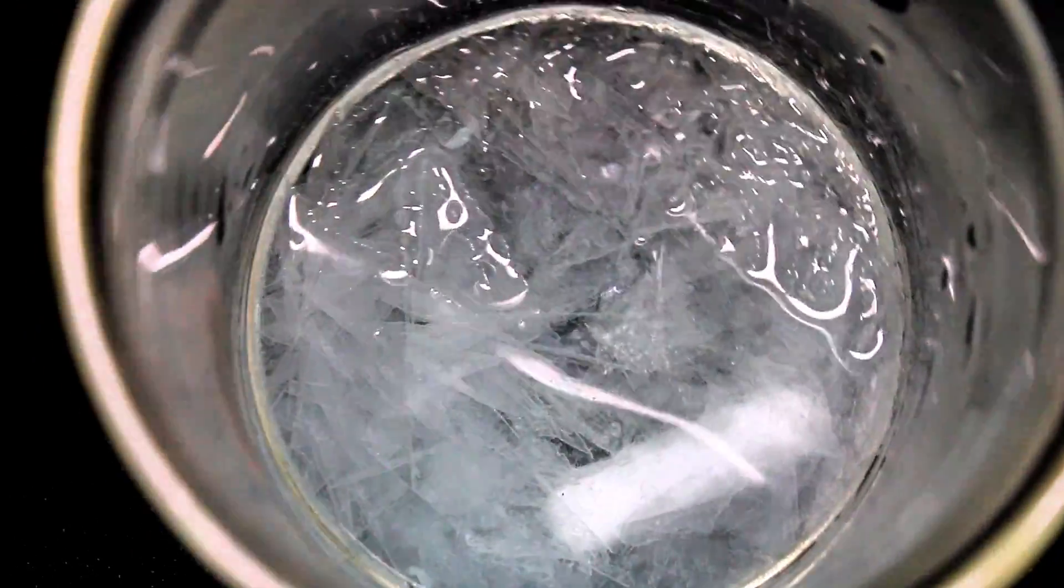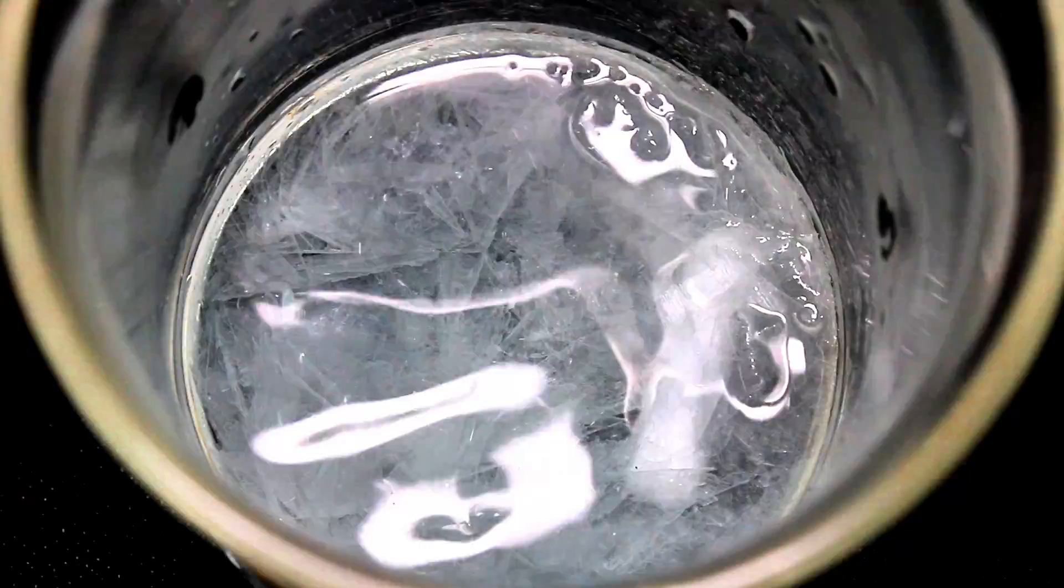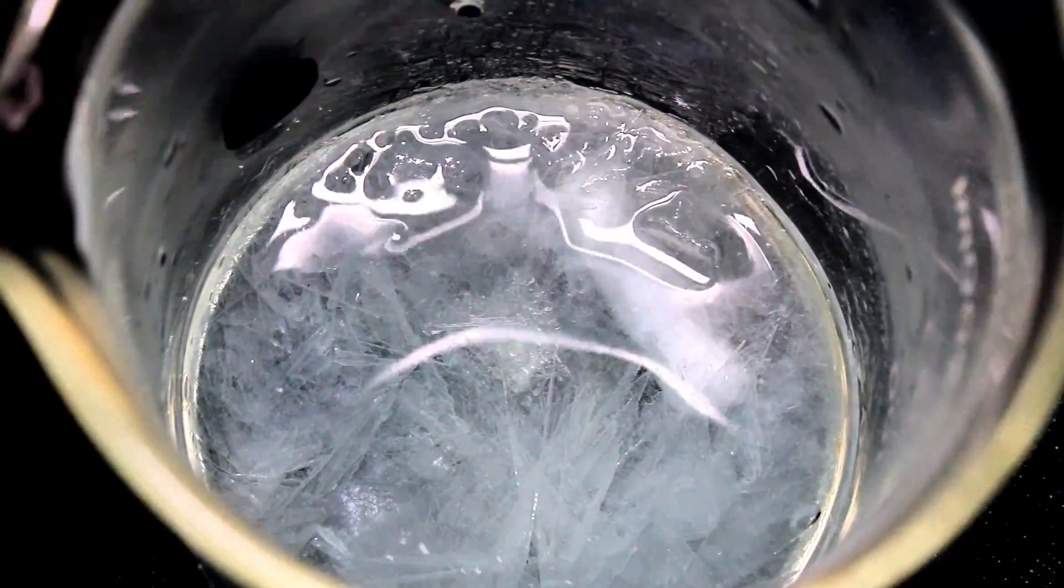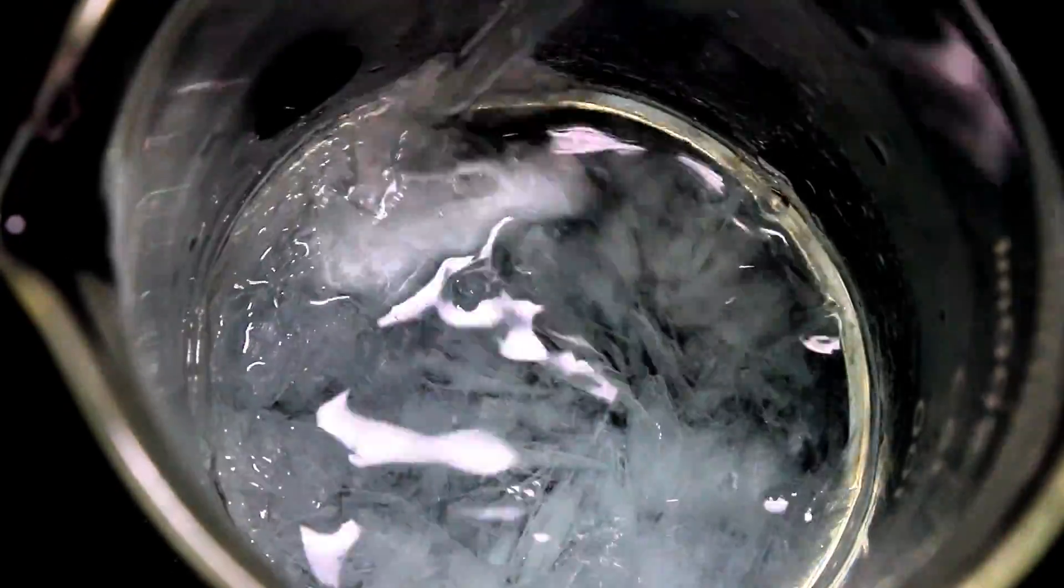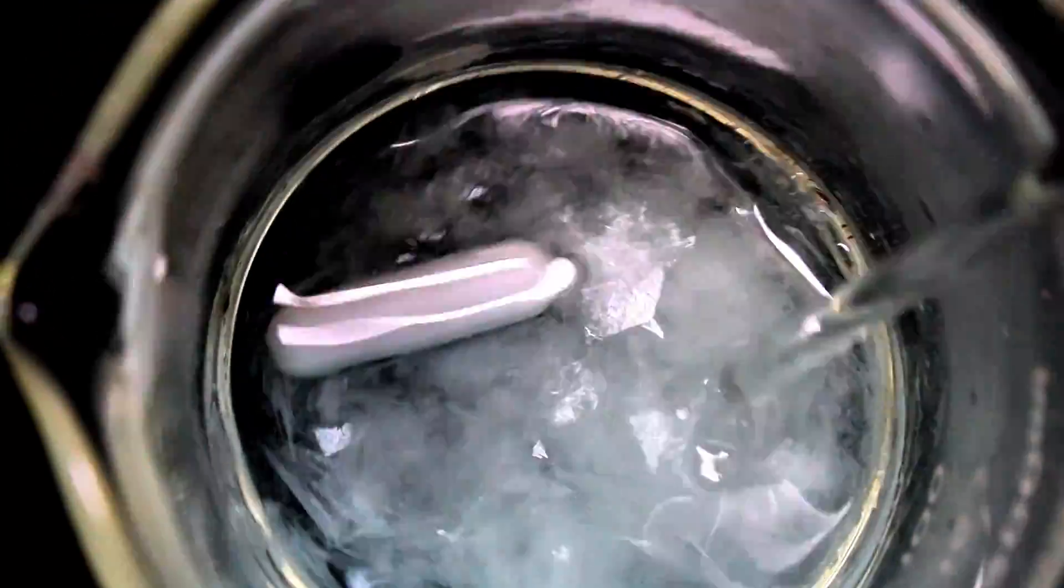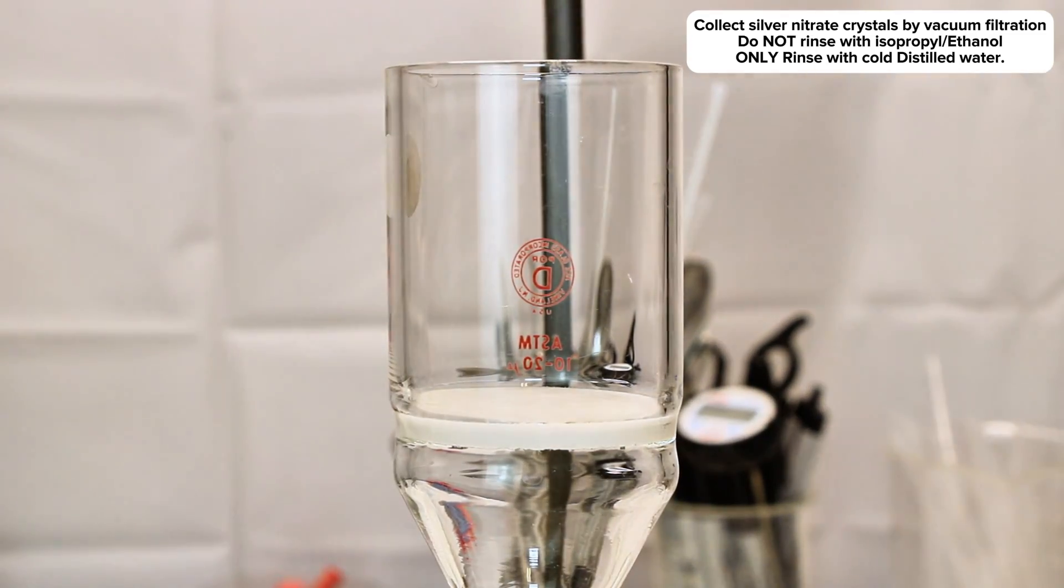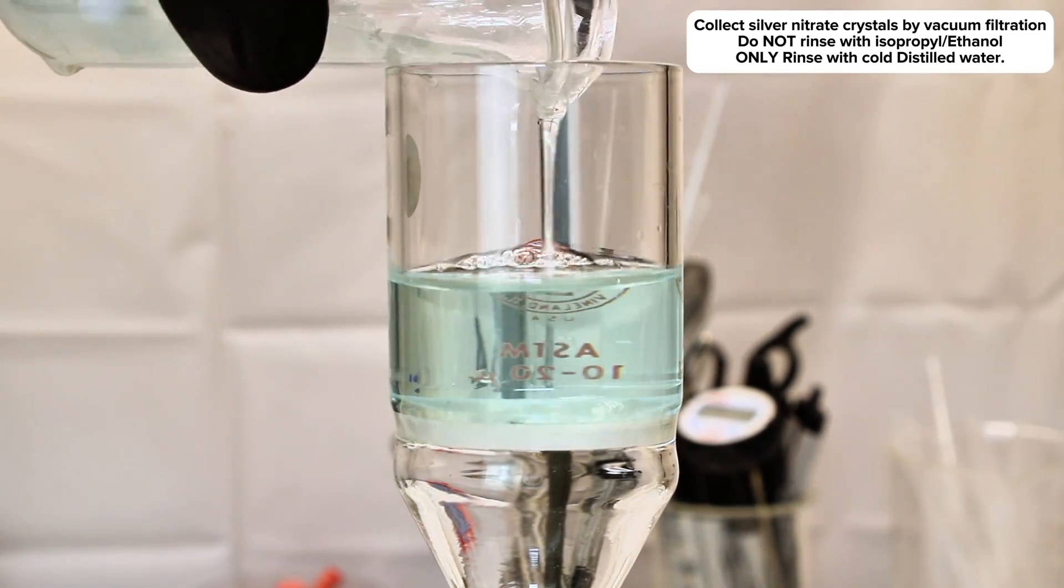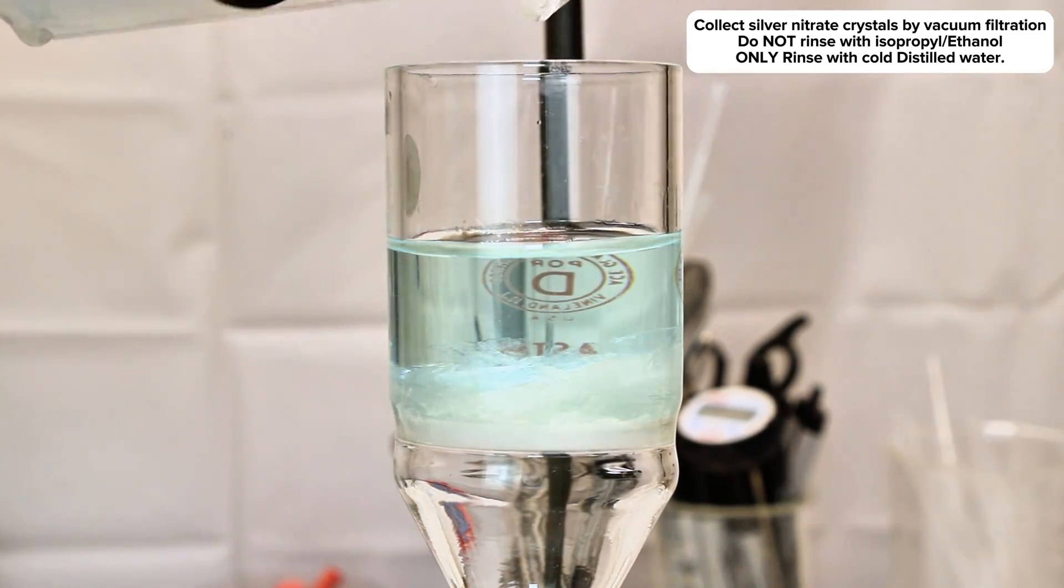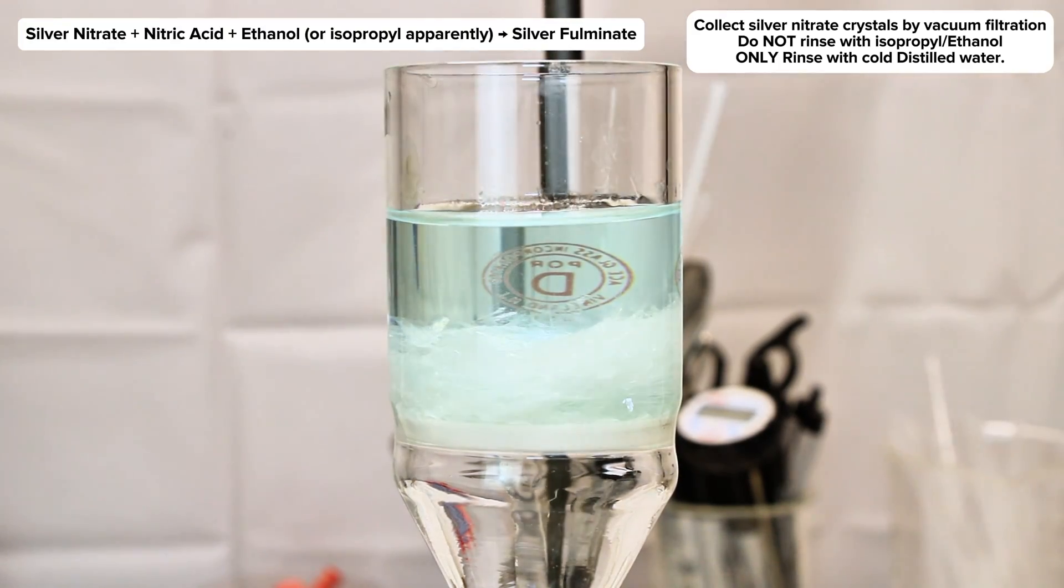Now here's the interesting part. Whenever I make a simple salt like this, I nearly always collect the crystals by vacuum filtration, followed by a rinse with cold water and another rinse with acetone or isopropyl alcohol to help them dry. This time was no different, but what I apparently didn't consider carefully enough is that silver nitrate in the presence of excess sulfuric acid and alcohol form silver fulminate.